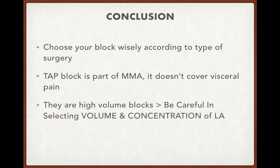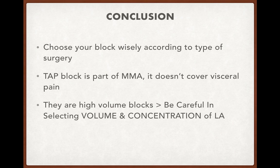To conclude: choose your block wisely according to the type of surgery. For surgery above the umbilicus, go for subcostal TAP block along with rectus sheath block. For surgery below the umbilicus, use TAP block in the mid-axillary line or ilioinguinal-iliohypogastric nerve block. TAP block is part of multimodal analgesia and does not cover visceral pain — add morphine, paracetamol, or diclofenac for visceral pain. These are high-volume blocks, so for bilateral TAP and bilateral rectus sheath block in laparotomy, dilute the drug adequately to ensure sufficient volume while preventing local anesthetic toxicity. Thank you.